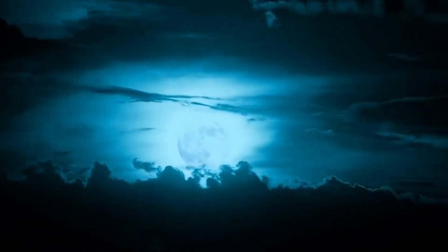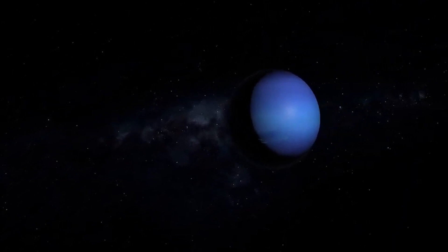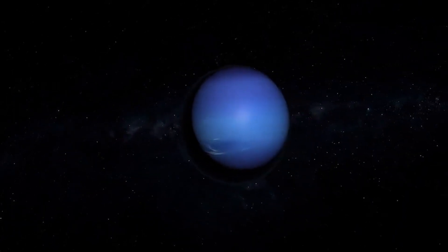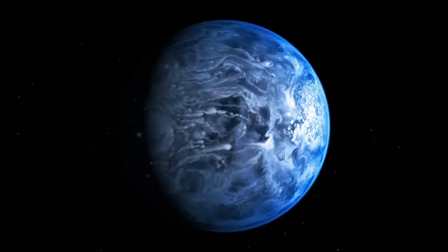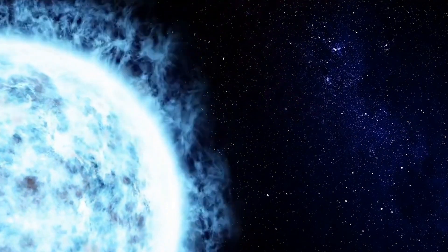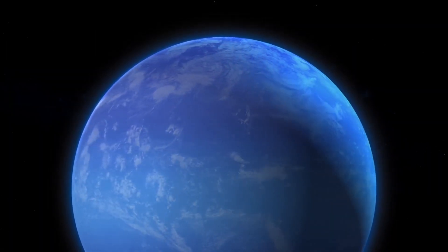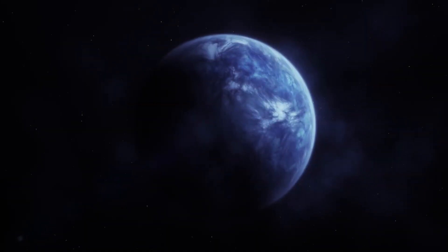Europa's core deforms and bends as a result of Jupiter's tides. The moon is continuously compressed and stretched as a result of these tidal pressures, which generates heat inside the moon. We refer to this as tidal heating. A major factor in maintaining Europa's geological activity and forming its distinctive features is the heating caused by the tides.